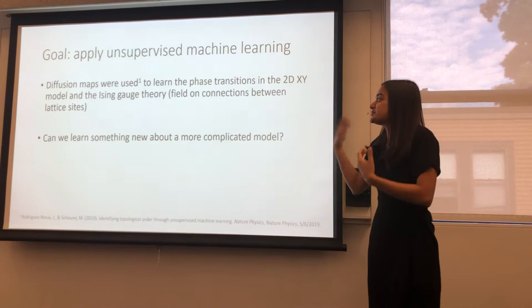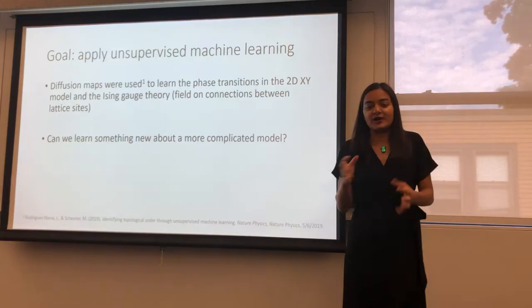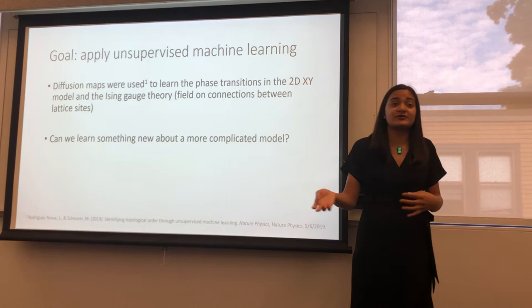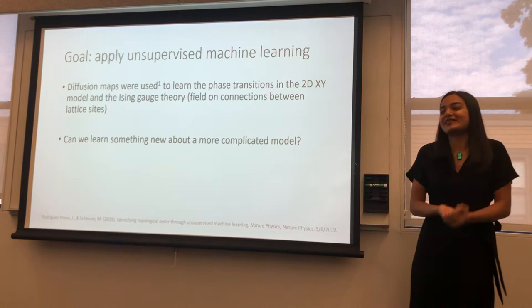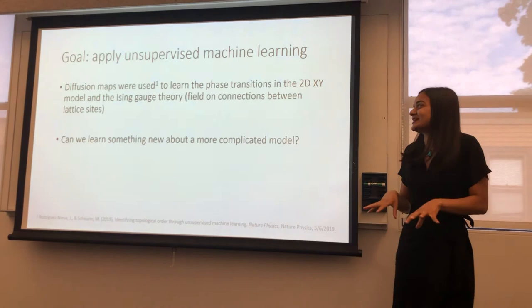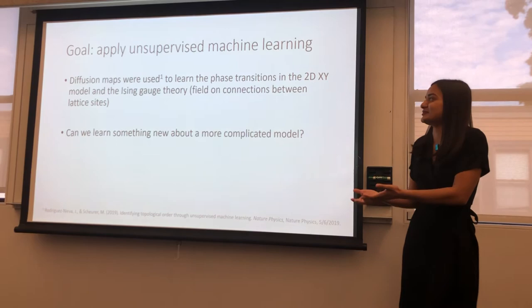So the particular technique that we use is called a diffusion map, and my project was based on a paper written by my postdoc and another postdoc here, in which they used a diffusion map to learn the topological phase transition in the 2DXY model. And that's a kind of canonical model, and so we wanted to see if we could learn something interesting about a slightly more complicated model. And so for the rest of the talk, I'm going to talk about how the diffusion map works, especially in the context of the 2DXY model, and at the very end, I'll talk about the model that I tried.